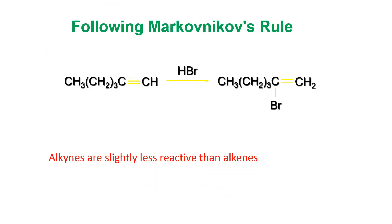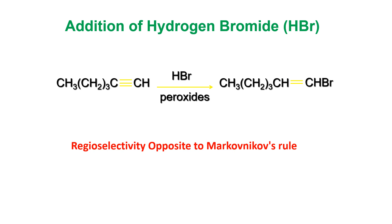Under Markovnikov's addition of hydrogen bromide, the same method applies. Alkynes are slightly less reactive than alkenes because, being highly unsaturated, they require two moles of reagent to achieve complete reaction, whereas alkenes require only one mole. Whenever peroxide is present in the addition of hydrogen halide, anti-Markovnikov's rule applies — in that case, the carbon bearing more hydrogens will receive the halide, and the carbon bearing fewer hydrogens will receive the hydrogen.